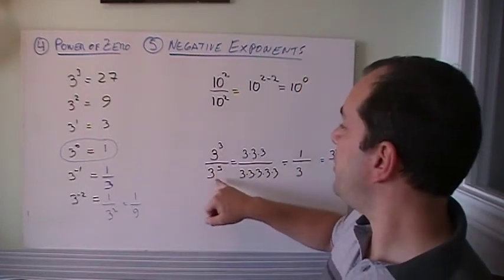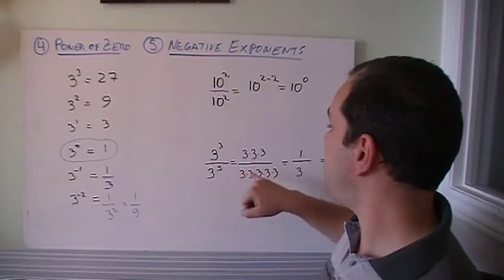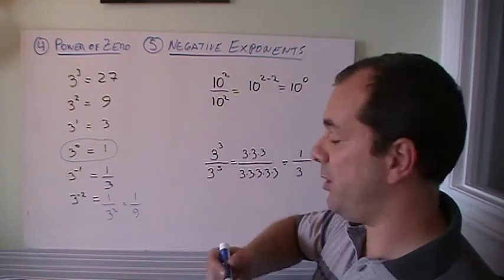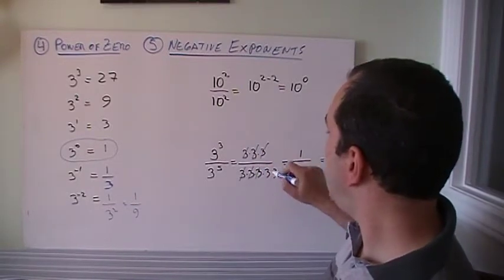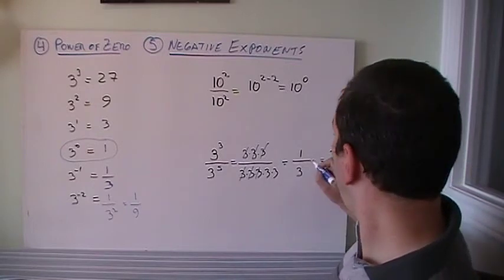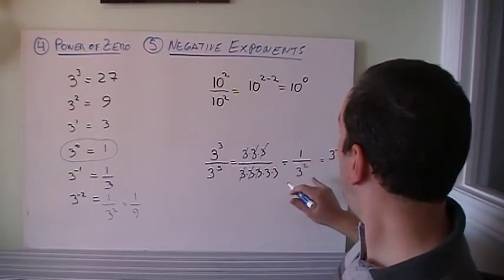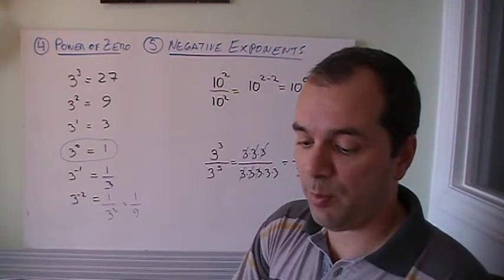What about this? 3 squared divided by 3 to the power of 5. If we expand it, I got 3 times 3. And if I expand it, I got 5 over here. So I can get rid of this 3, and I got 1 over 3 to the power of 2. And that is 3 to the minus 2, like we had over here. So that worked out perfectly.